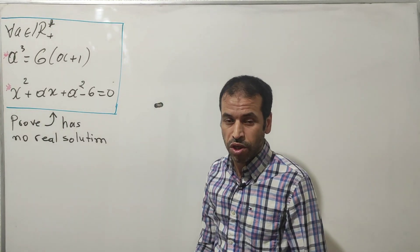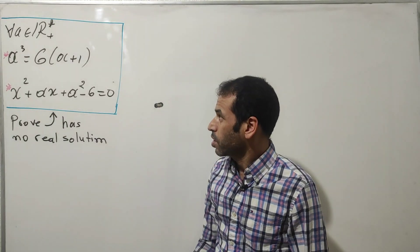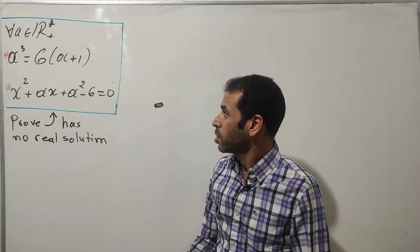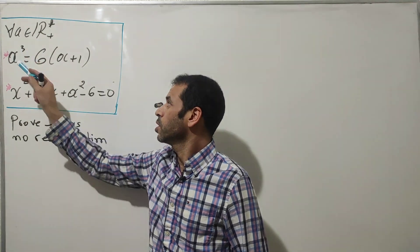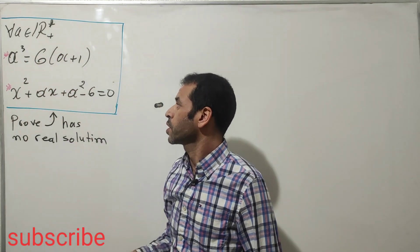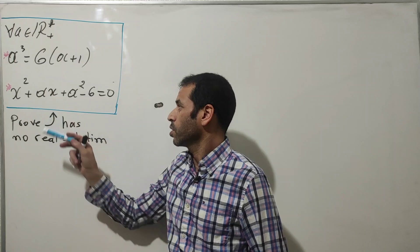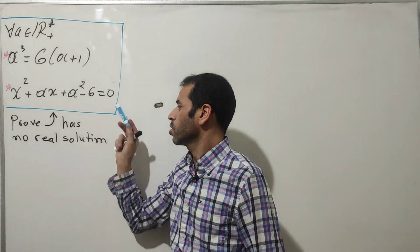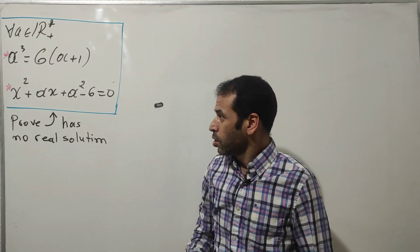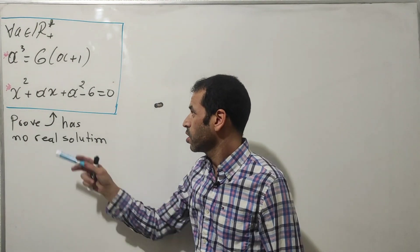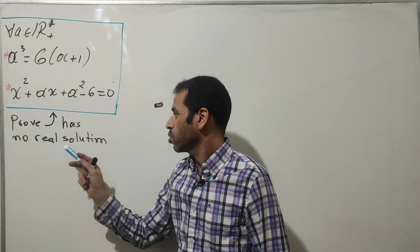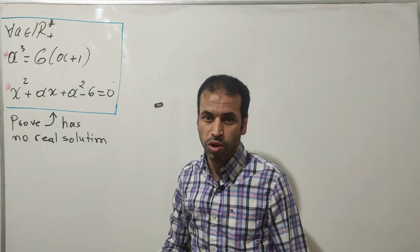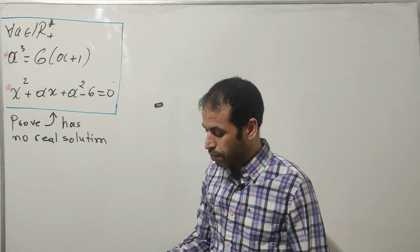In today's video I would like to introduce a very nice quadratic equation satisfying these two conditions. For a as a positive real number such that a³ = 6(a + 1), here is the following equation: x² + ax + a² - 6 = 0. The question we are going to prove is that this equation has no real solutions — in other words, this equation only accepts solutions in complex numbers.